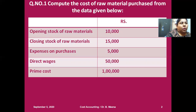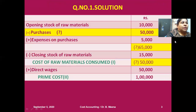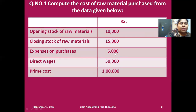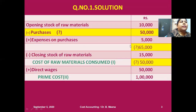Let me check out the solution — how to prepare a cost sheet based on the information given in this question, and how to calculate the purchase. I have a cost sheet format with two columns: particulars and amount. As per the cost sheet format, opening stock of raw materials is given as 10,000. Plus purchases — that is the question — that's why I mentioned it in yellow color and put a question mark. Plus expenses on purchase, which is given in the problem as 5,000. Without knowing the purchases, how can I get the summation?